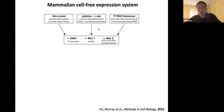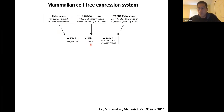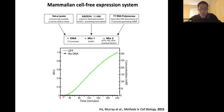We supplement the HeLa lysate with a soluble fragment of an enzyme GADD34, which dephosphorylates the translational factor eIF2-alpha and actually promotes translation. We also supplement with T7 RNA polymerase. If you add a piece of DNA with a T7 promoter along with certain buffers, you can recapitulate protein synthesis. Here's a simple plate reader experiment showing that if you add DNA encoding GFP, you get very robust production of GFP over a few hours, and obviously if you don't add any DNA, there's nothing.